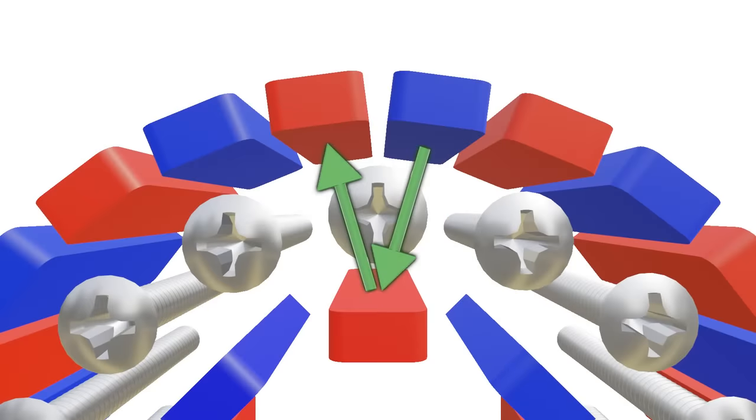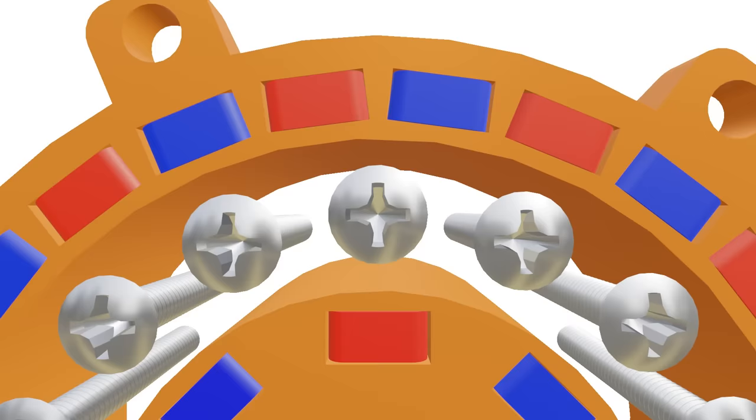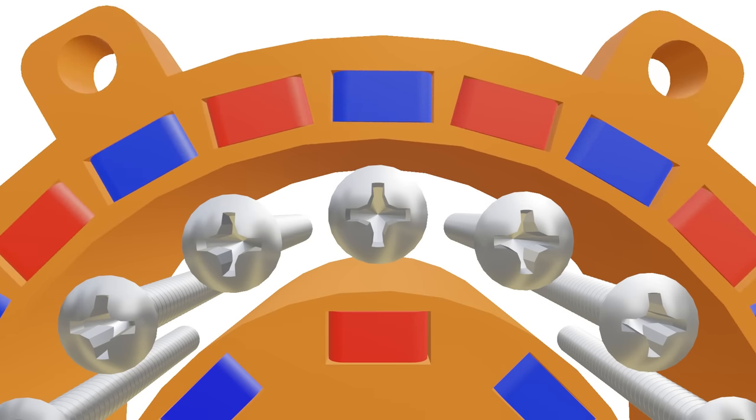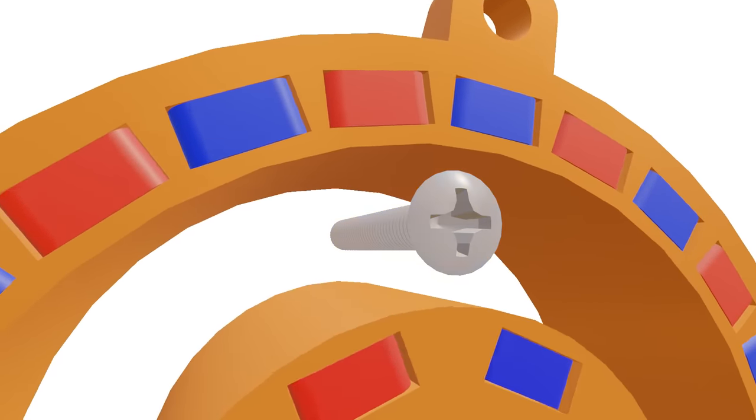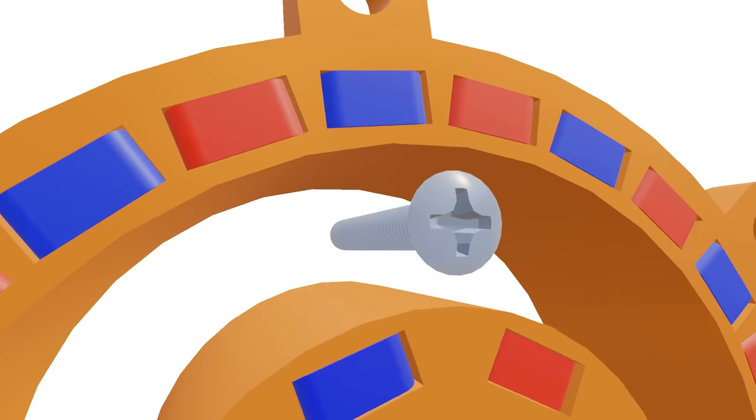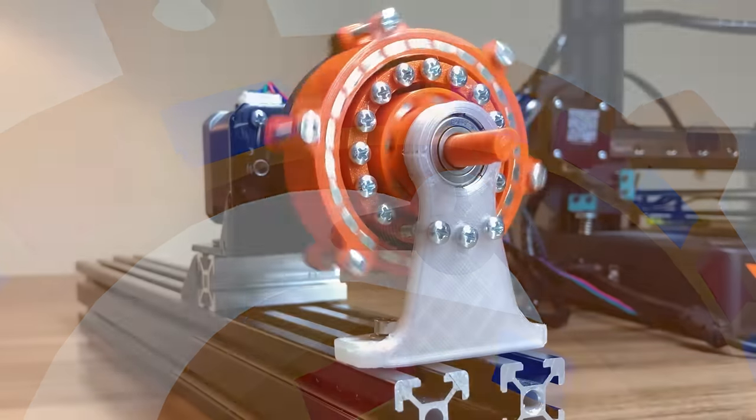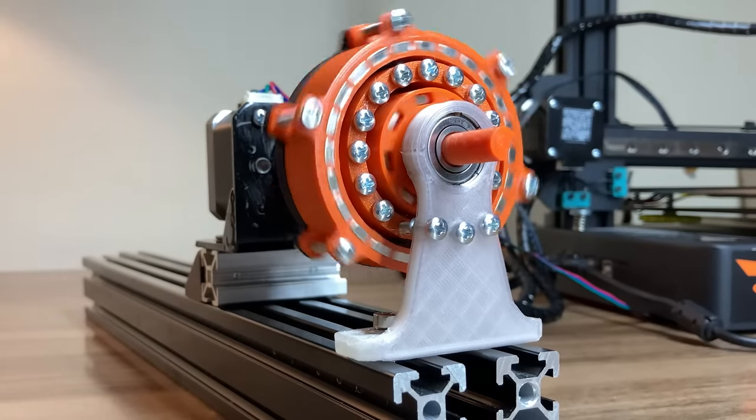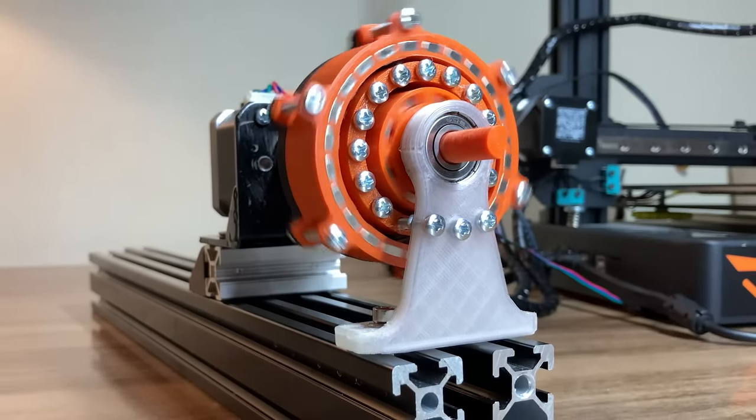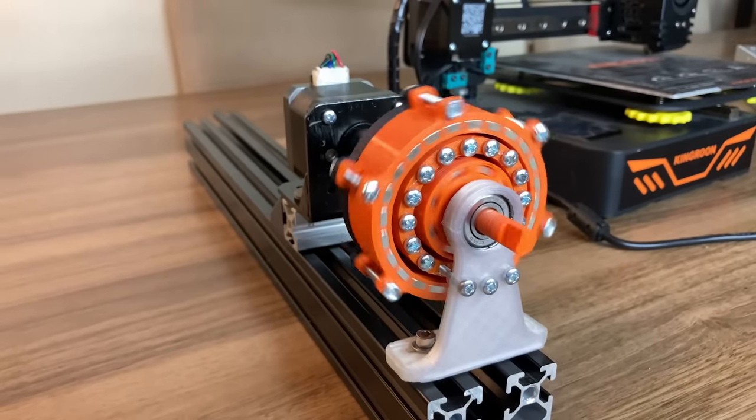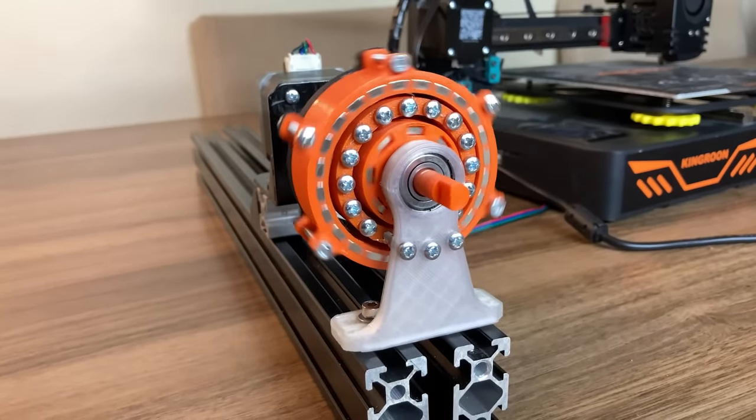These forces create a tangential force in this direction, and this force causes the ring gear to rotate. One of the remarkable things about this magnetic concept is that there is absolutely no physical contact between the rotors. The engagement is completely non-contact through magnetic forces, which gives them many advantages such as much quieter and lubrication-free operation.